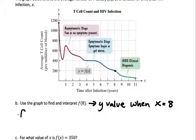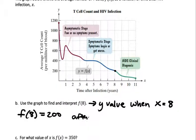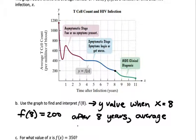So f of 8 is equal to 200. In terms of the interpretation, this means that after 8 years, the average T-cell count is 200.